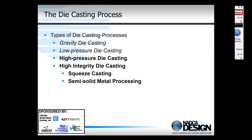Let's talk about the die casting process. When you use the term die casting around the world, it tends to include any metal cast into a metal mold. So it can include gravity processes, low pressure processes, or a tilt permanent mold process. But here in North America, we tend to make a more careful distinction.